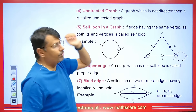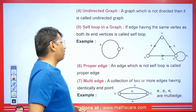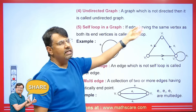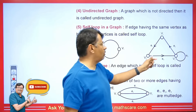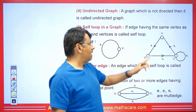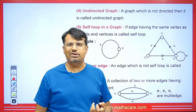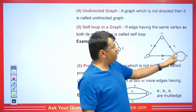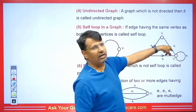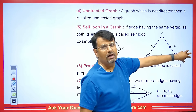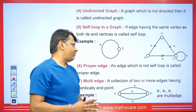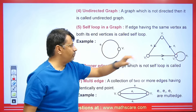Now let's talk about self-loop in a graph. If an edge has the same vertex as both its end vertices, it is called a self-loop. For example, we have vertices V1, V2, V3 and edges E1, E2, E3, E4. Look at the edge that starts from V3 and ends at V3 — it starts and ends at the same vertex. So this is known as a self-loop.